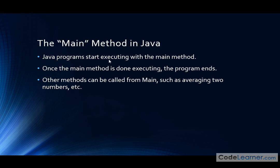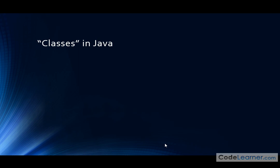The most important method in Java is the main method. Every single Java program we write is going to have a main method. When the program starts, the Java virtual machine looks for the main method and begins executing at the top of it. Once the main method is done executing, the program stops. You can call other methods from the main method, pop down to do a task, and then pop back, but essentially every program starts with a main method. Keep that in mind when we write our very first Java program.